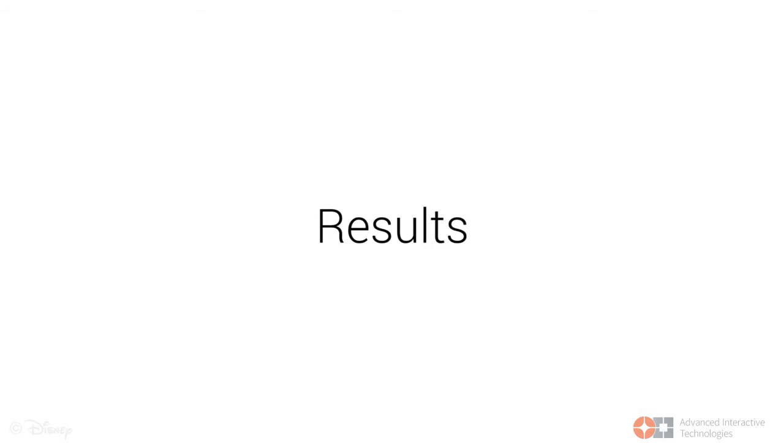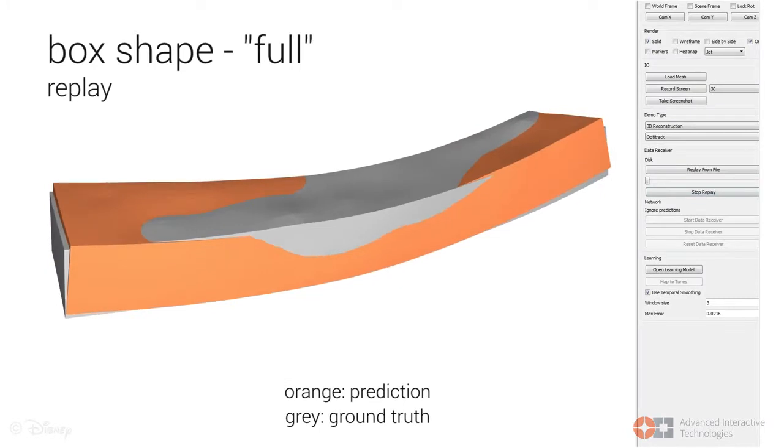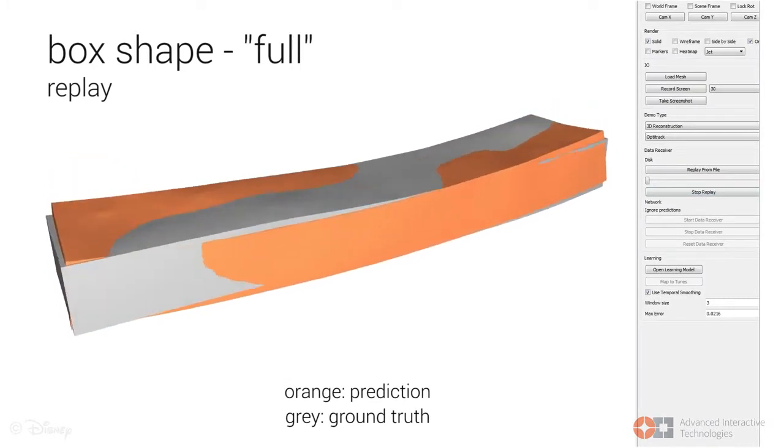To validate our method, we fabricated a number of examples. Our first test case is a flexible bar that can sense bending deformation in two directions as well as twisting.